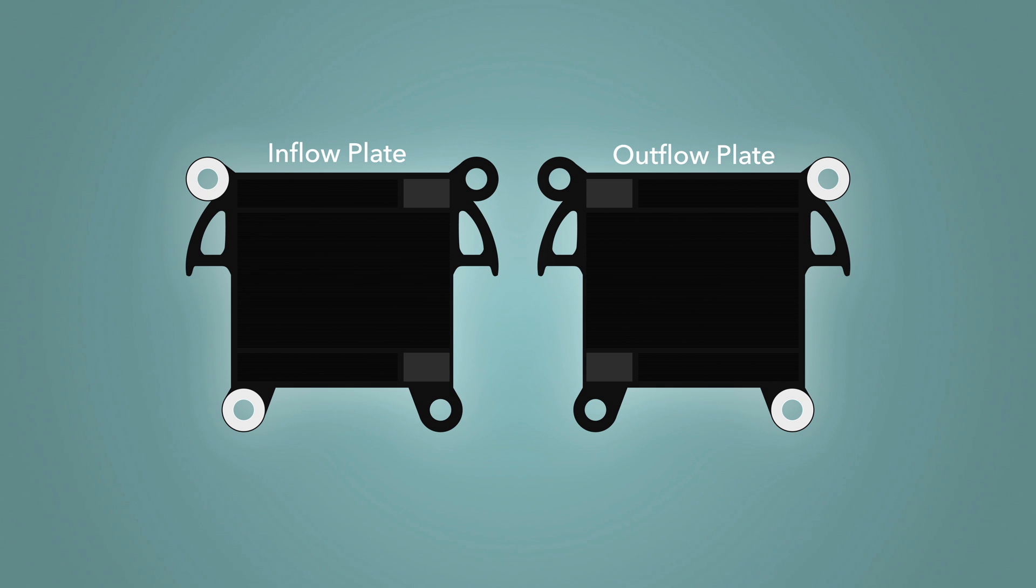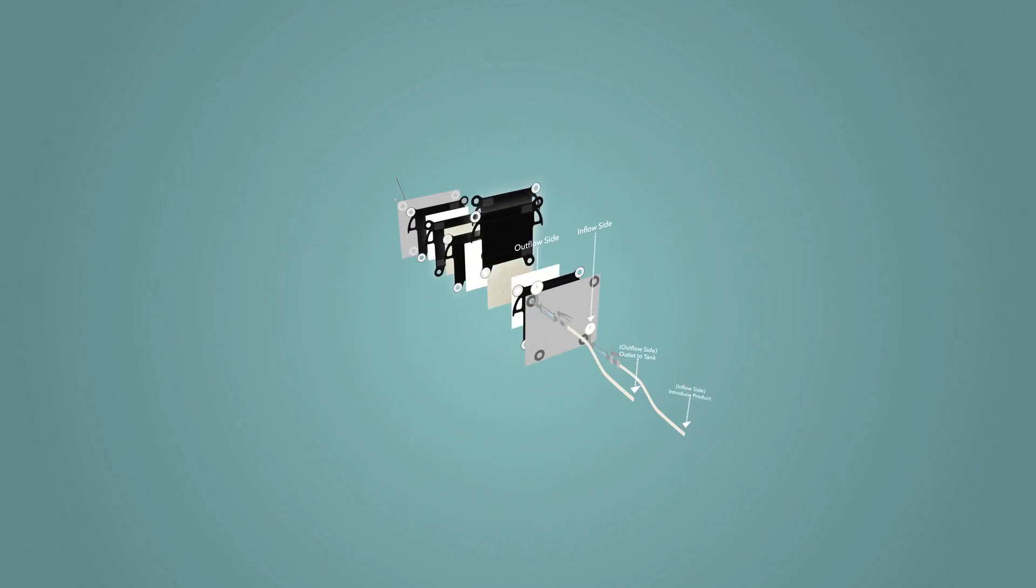Each addition of a new inflow and outflow plate increases the capacity of the filtration and runs parallel to the other filtration pairs. All intermediate filter plates are equal but are defined as either inflow plates or outflow plates based on their orientation in the unit.